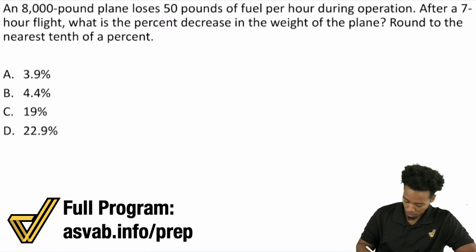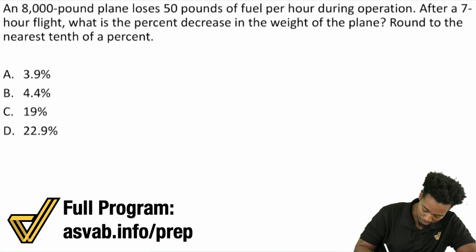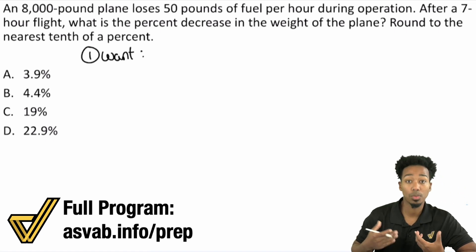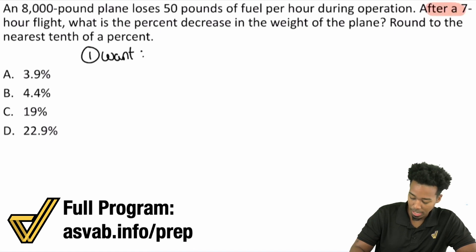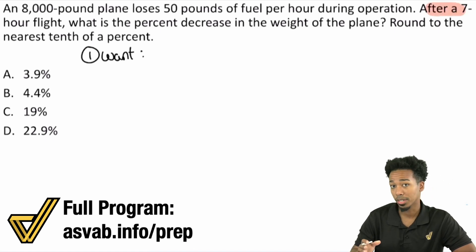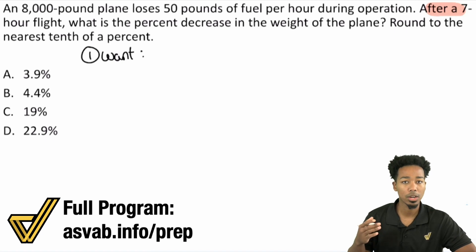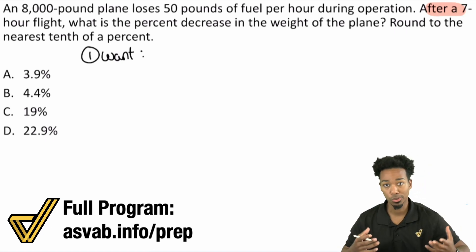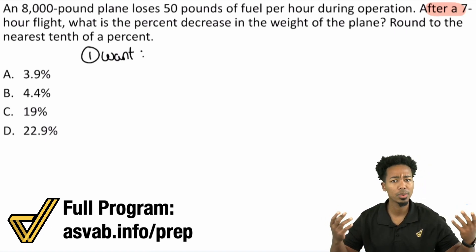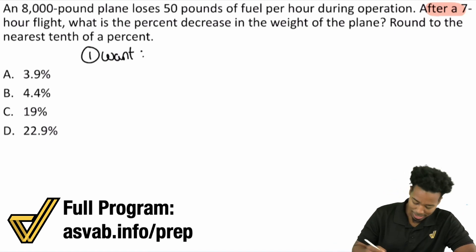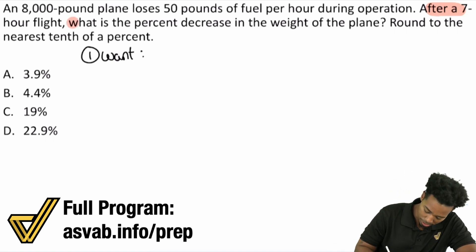First things first, what is it that we want? What you want is: what's the question? So we're going to highlight the question here. Notice I'm not highlighting from the beginning of the sentence. I'm going to look for that question action word like who, what, when, where, why, how many, which of the following. You want to look for those as well.